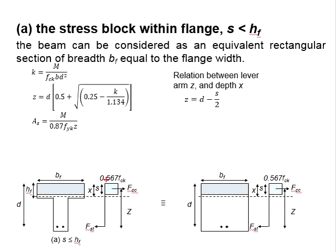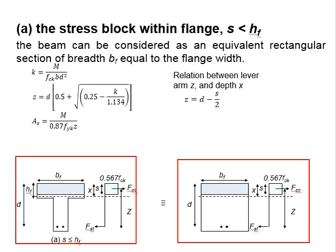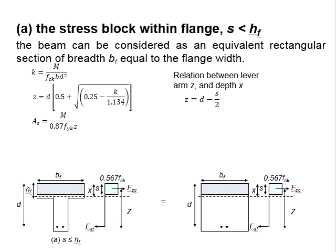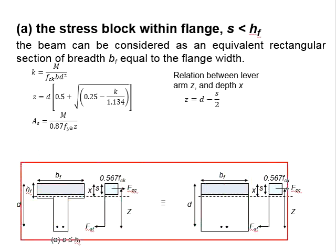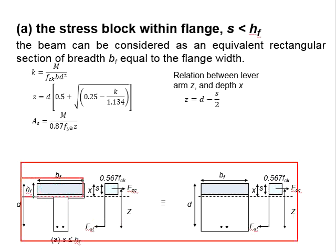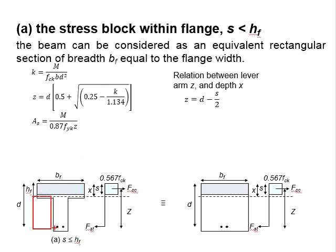In other words, the moment resistance of this section is actually equal to the moment resistance of this section. This brings us to an understanding that proper utilization of the flange in flanged sections could lead to a more economical design of a reinforced concrete beam, particularly in terms of the amount of concrete being used. This can reduce the self-weight of the concrete while maintaining the strength of the member.